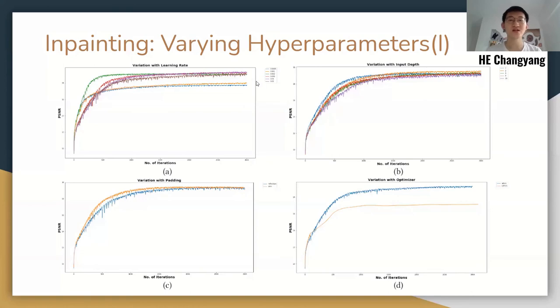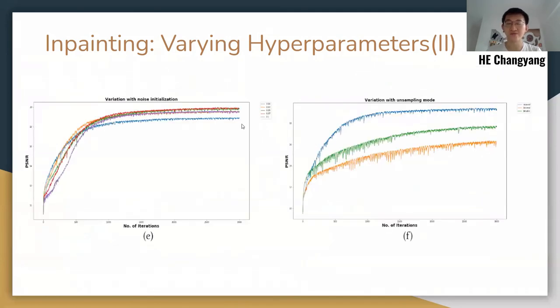This is Changyanghe, and I'm going to introduce our experiments on inpainting and restoration. This figure shows experiment results of inpainting under different hyperparameters, including learning rate, input depth, padding, and optimizer type. As we can see, all these hyperparameters except for padding have substantial influence on the PSNR performance. For noise initialization and upsampling mode, both factors influence the performance of inpainting. The optimal upsampling method for inpainting is nearest interpolation in blue line, which is different from other tasks.